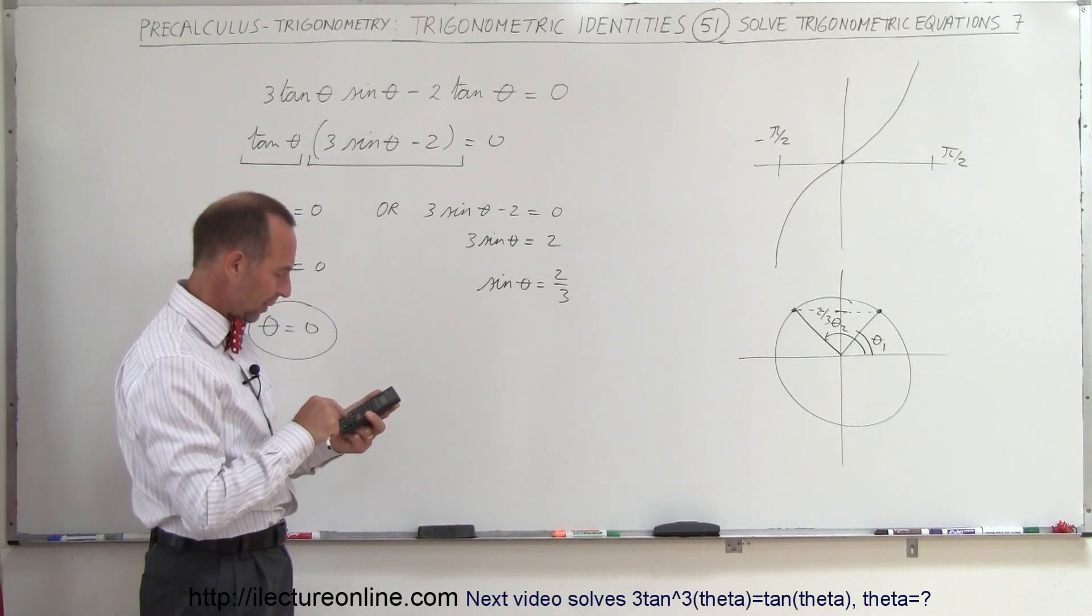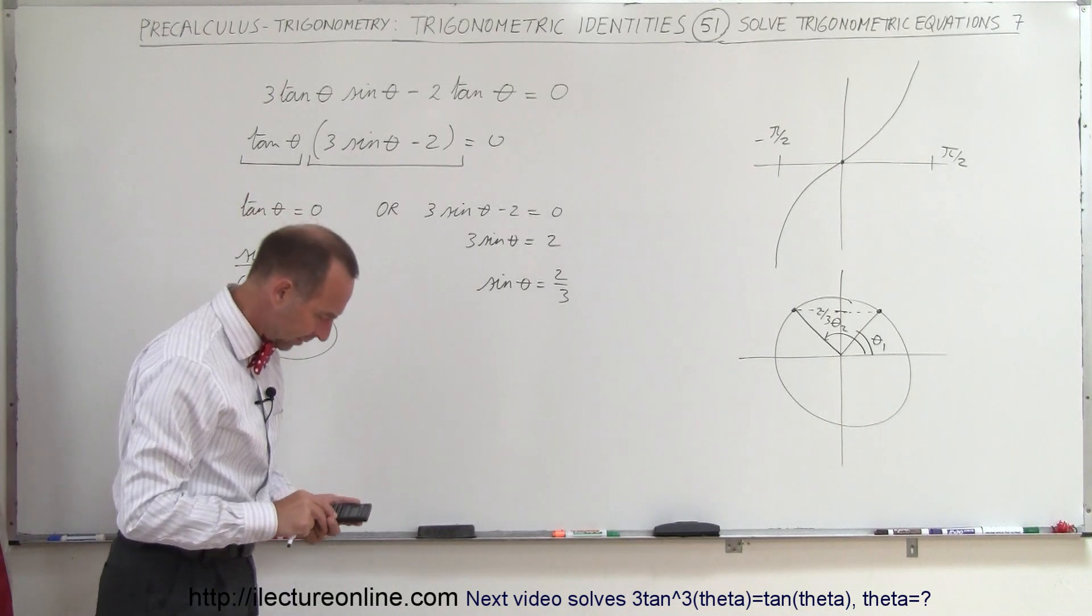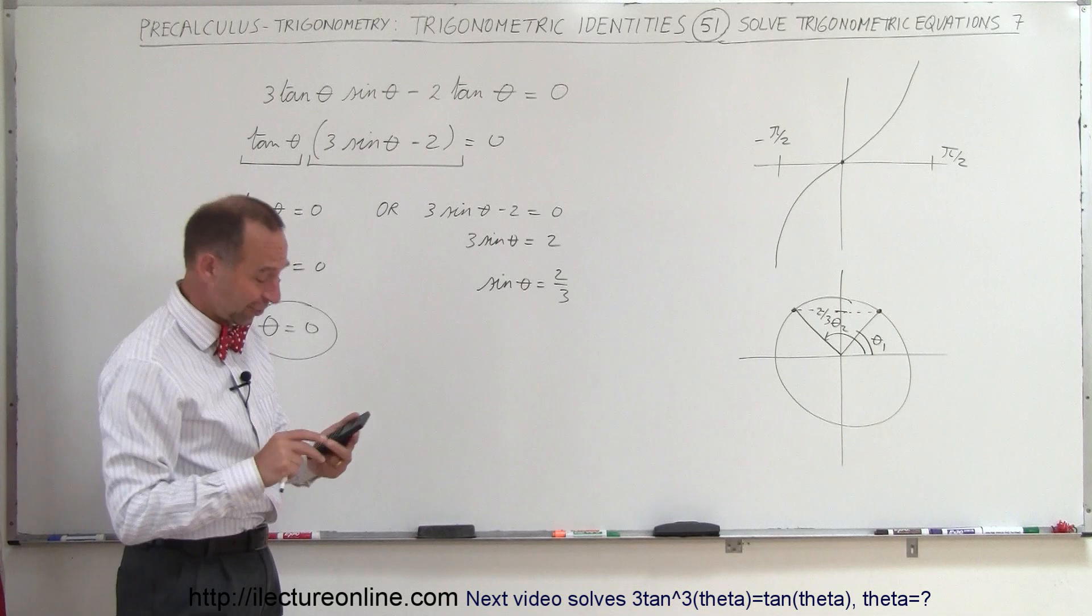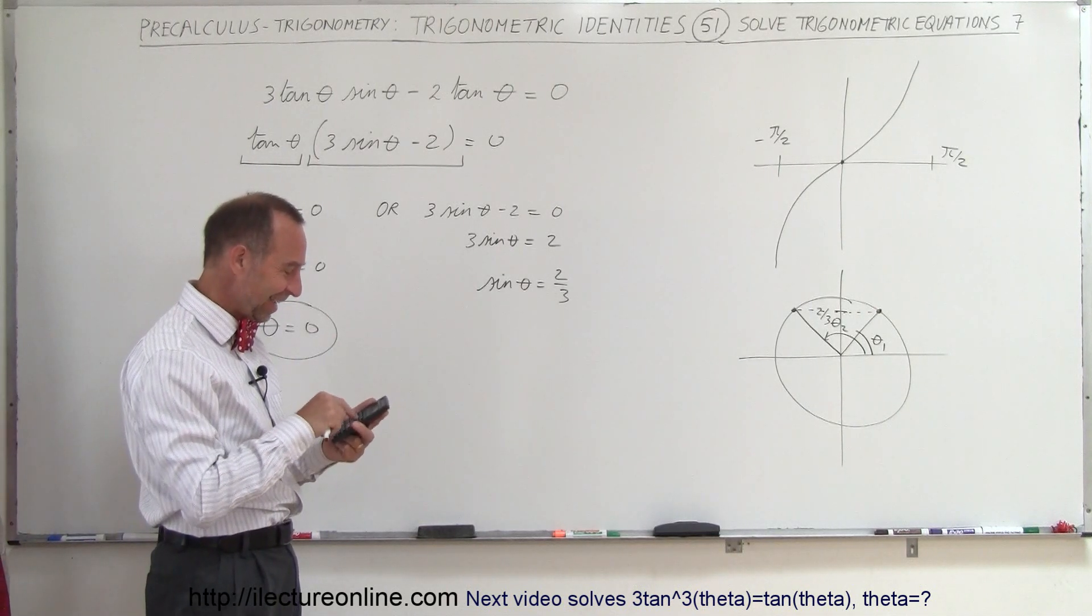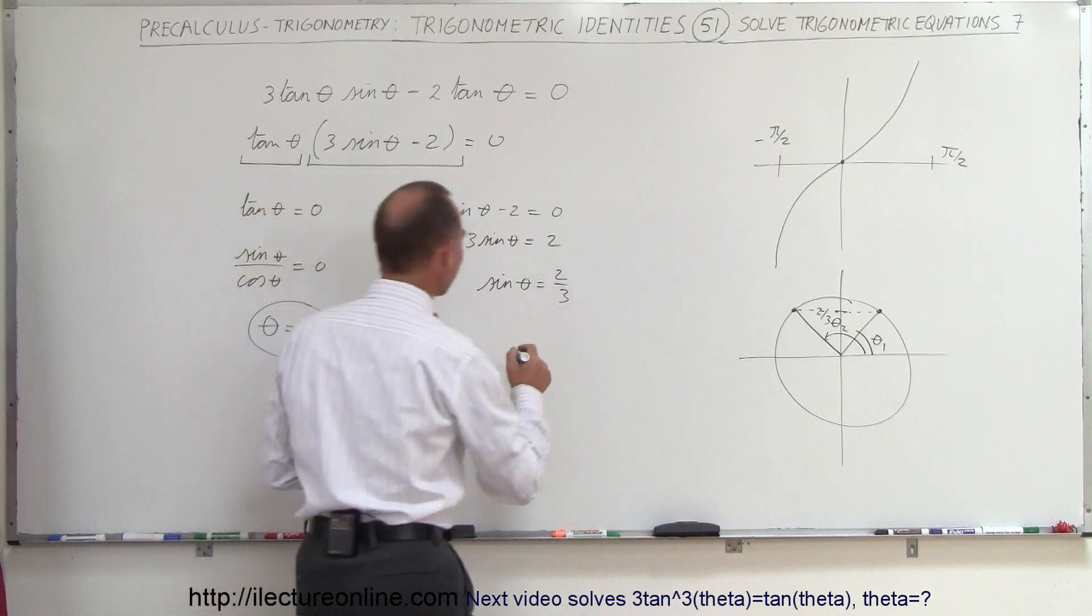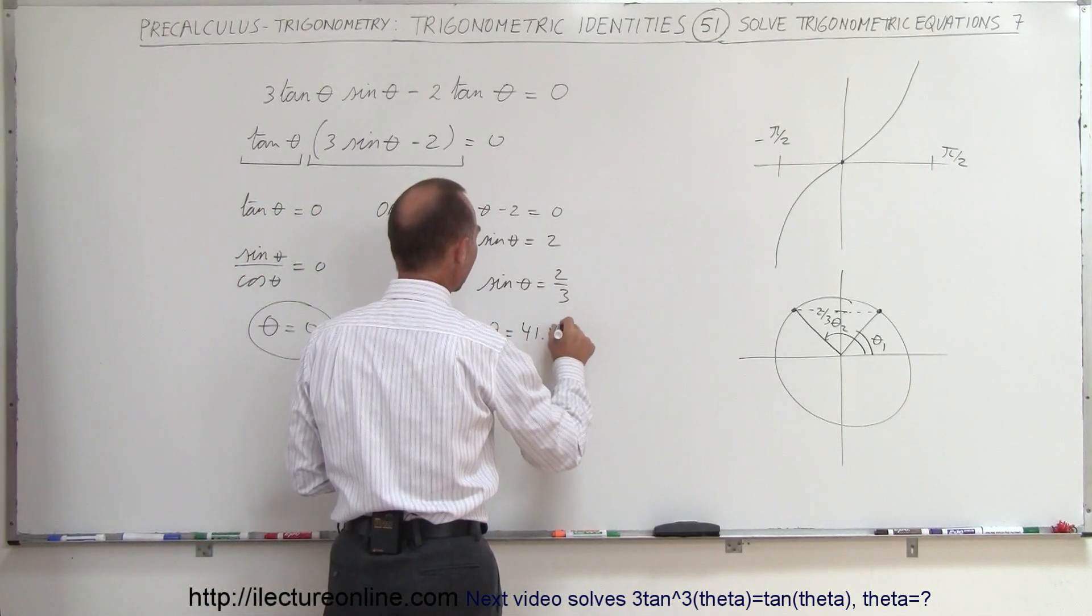So two divided by three equals, take the inverse sine and we get 41.8 degrees. So theta is equal to 41.8 degrees. Of course, that would be the first angle right here.